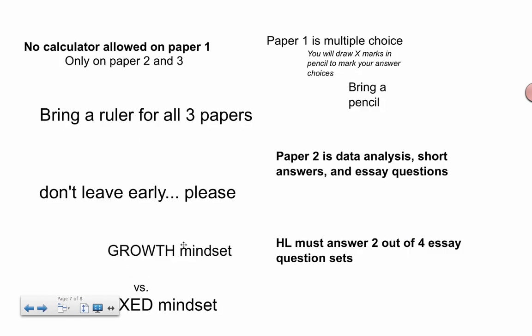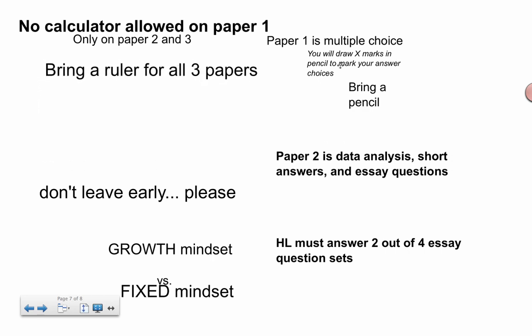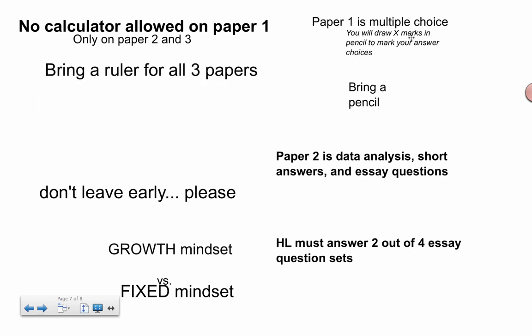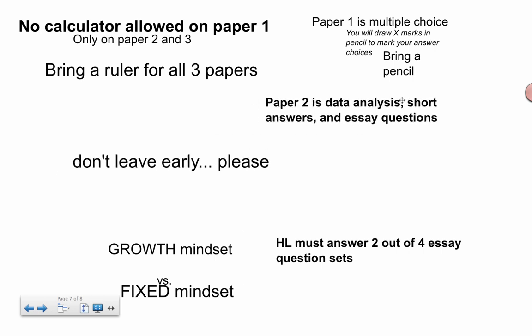And finally, last few things here. No calculator allowed on Paper 1. Only on Paper 2 and 3. You should be writing in pen. Bring a ruler for all three papers. Paper 1 is multiple choice. You're going to use pencil there to draw X marks. Don't leave any blank spaces there. Paper 2 is the data analysis, short answer, and essay questions.